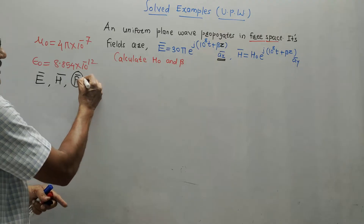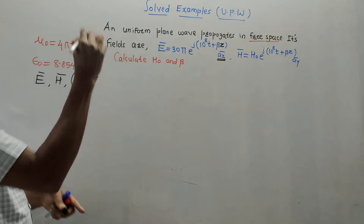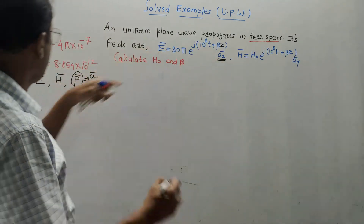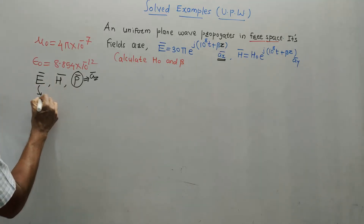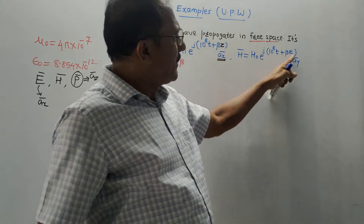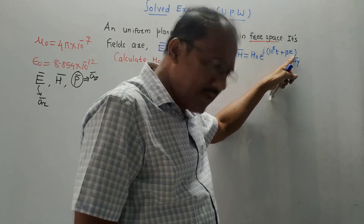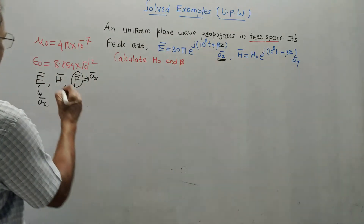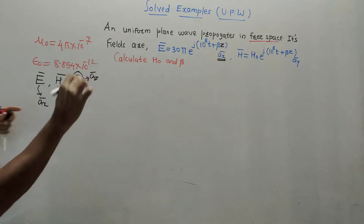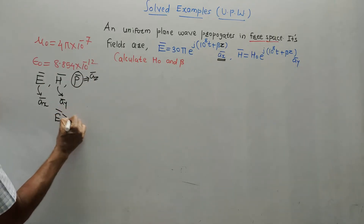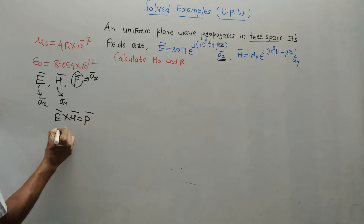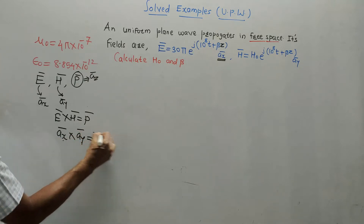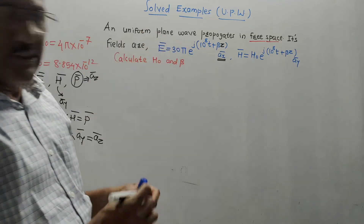So the direction of power in the given equation is along z, that is a_z-bar. At the end of the equation, the term a_x-bar represents the direction of E-bar. Similarly, in case of H-bar, the multiplying term with beta is z, so that is the direction of power, and at the end of H-bar we have a_y-bar indicating the direction of H-bar. Mathematically, E-bar cross H-bar equals P-bar, so a_x cross a_y equals a_z, which confirms the directions.